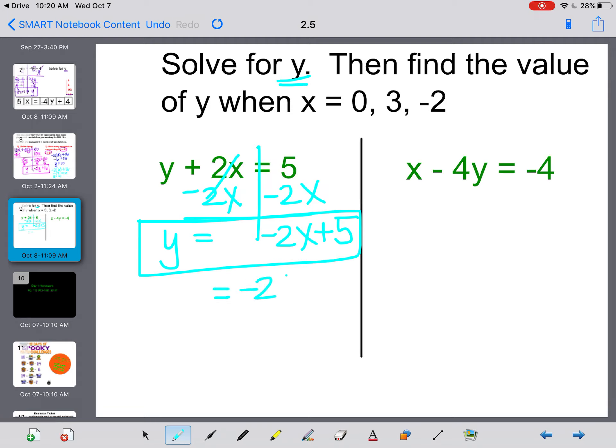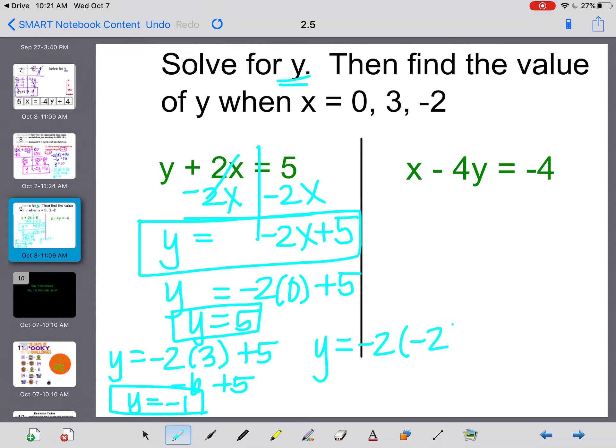Now I'm going to plug a 0 into this x. If I go negative 2 times 0 plus 5, well anything times 0 is 0, plus 5 equals 5. So y equals 5 when x equals 0. Then we're going to plug in a 3. So y equals negative 2 times 3 plus 5, which is negative 6 plus 5, meaning y would be negative 1. Again, if x were 3, and now if we plug in a negative 2, y equals negative 2 times negative 2 plus 5. 4 plus 5 tells me that y would equal 9 if x were equal to negative 2.